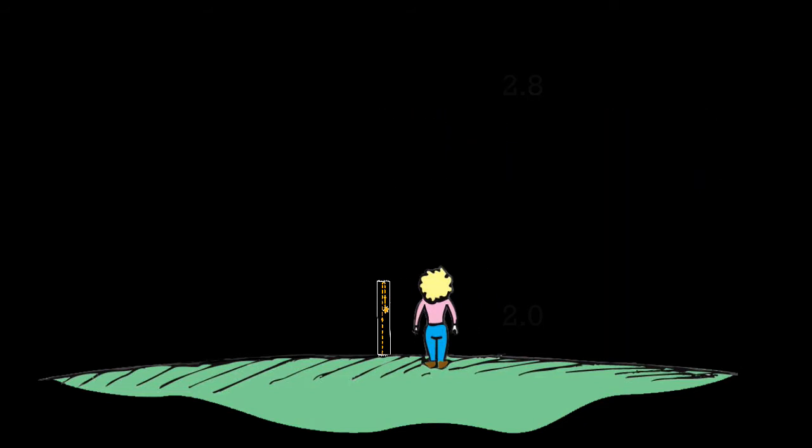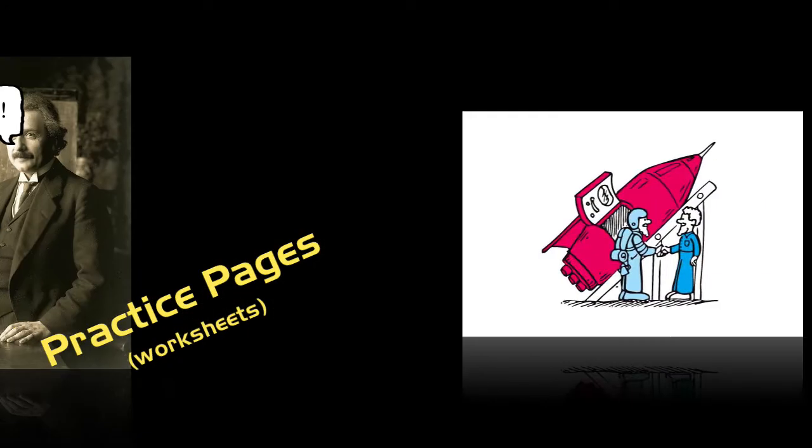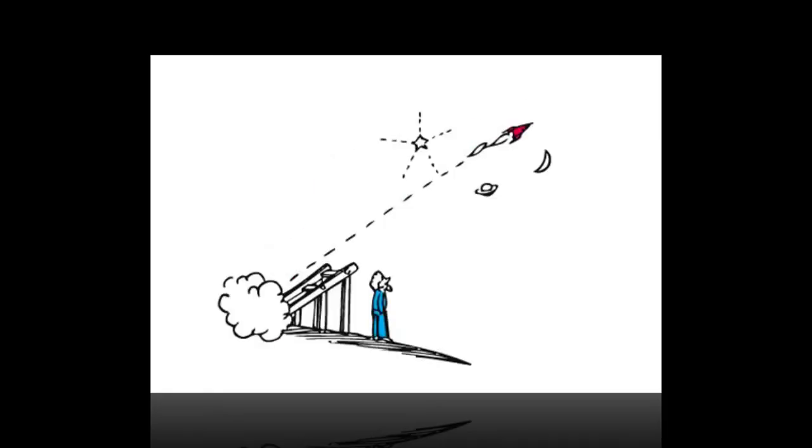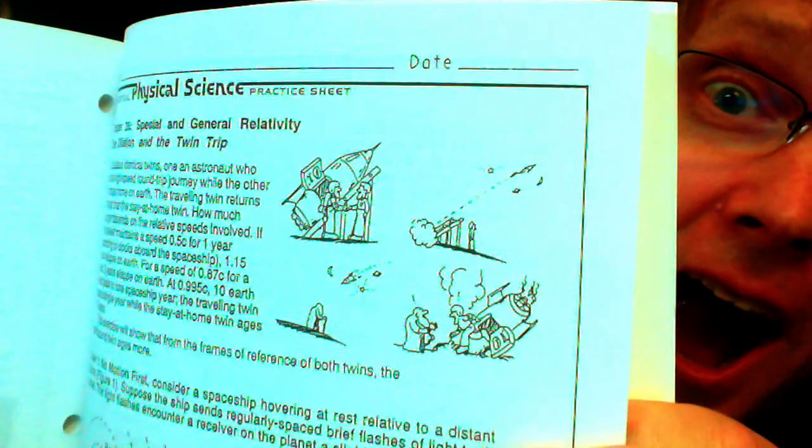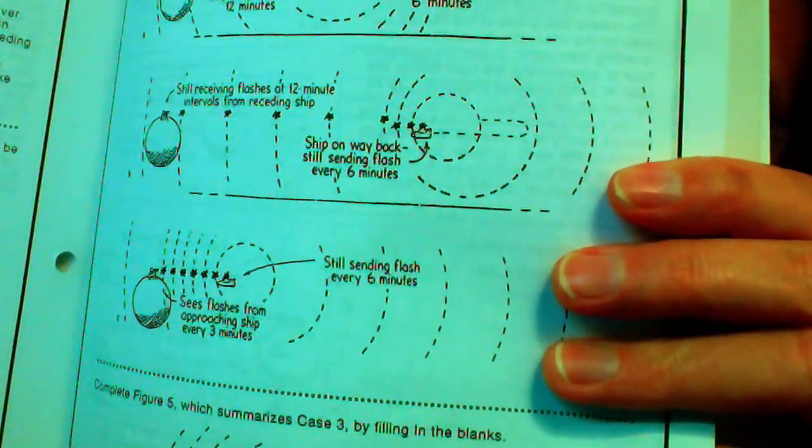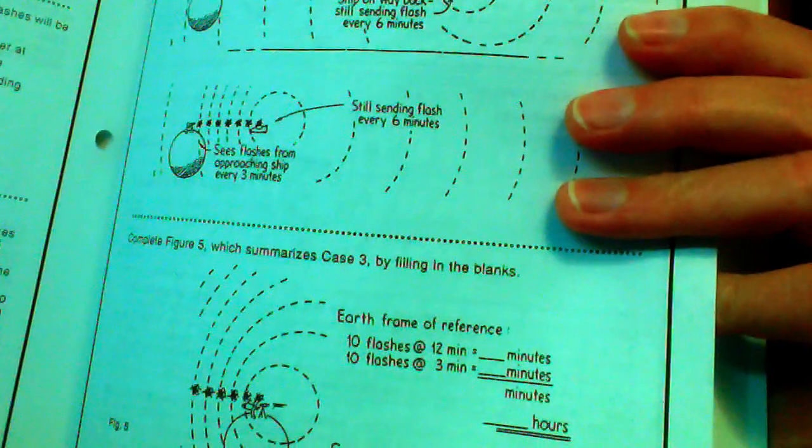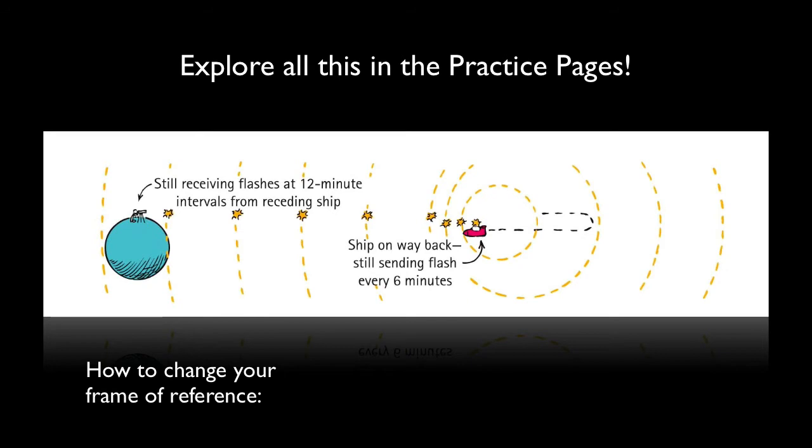Another great thought experiment you should explore is the twin trip, which you'll find as one of our worksheet practice pages. In this scenario, one twin leaves his brother behind, travels into space, comes back having aged less than his stay-at-home brother. It's really cool, and yet another consequence of the speed of light being constant across all frames of reference. And if you're bugged as to why one brother necessarily ages more than the other, the answer lies in that only one of the brothers undergoes acceleration.